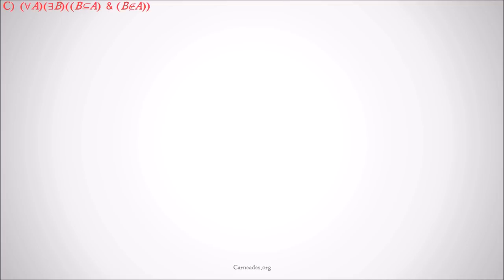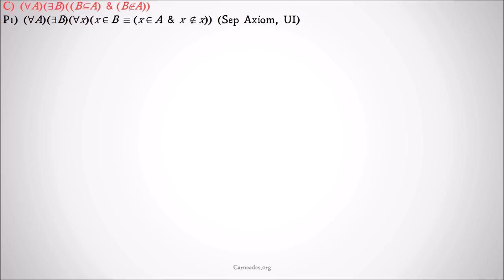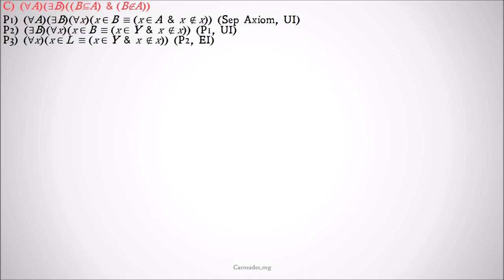We're trying to prove that for all a, there exists a b such that b is a subclass of a and b is not a member of a. We're going to start with that separation axiom and get our a's and b's in there. First we'll prove that b is a subclass of a, and then we'll prove that b is not a member of a. We start with the separation axiom, then universally instantiate a, existentially instantiate b, and universally instantiate x — basically just taking off those quantifiers at the beginning. Variables from the end of the alphabet were universally generalized; variables from the middle or beginning were existentially generalized.